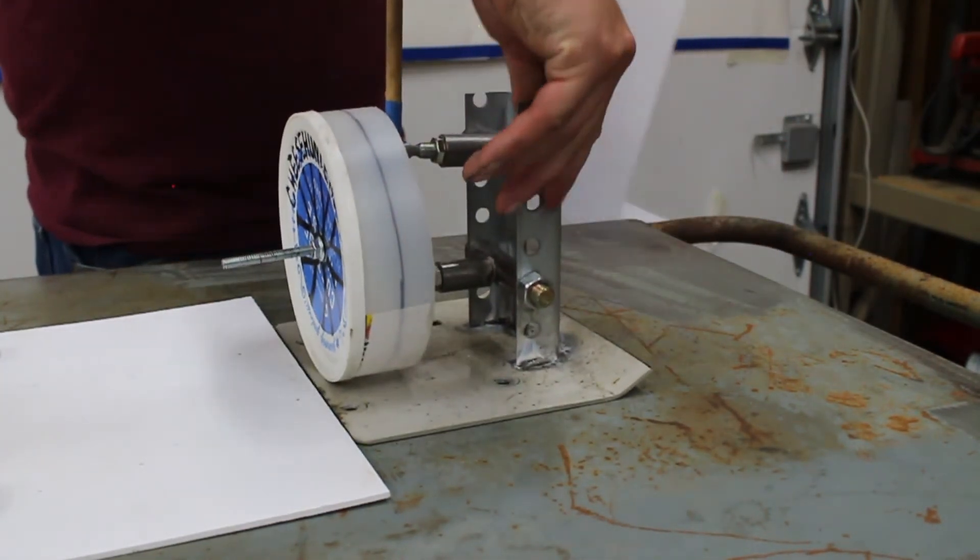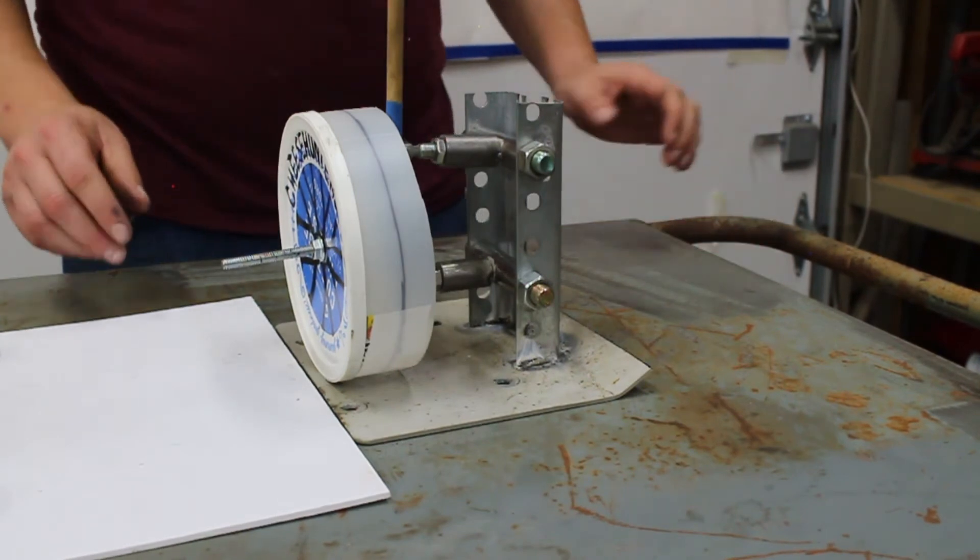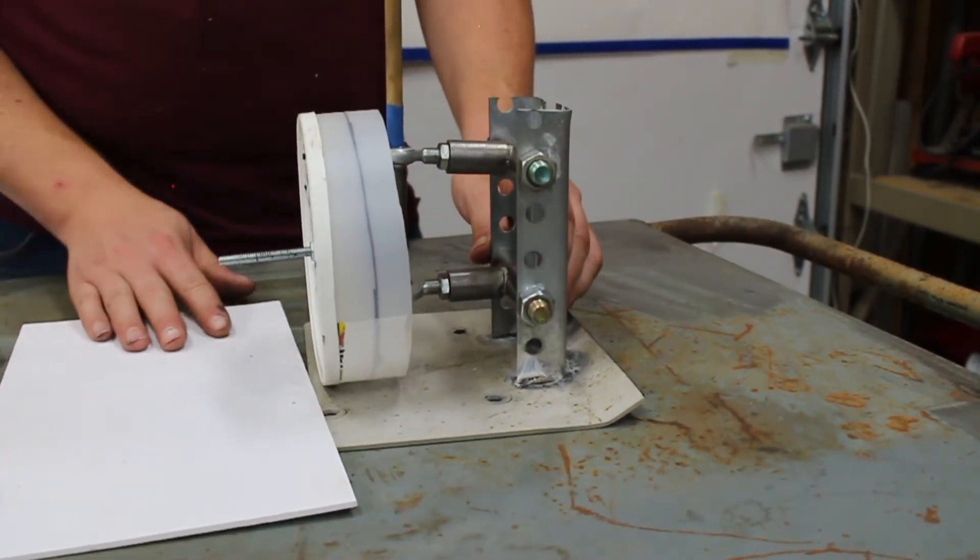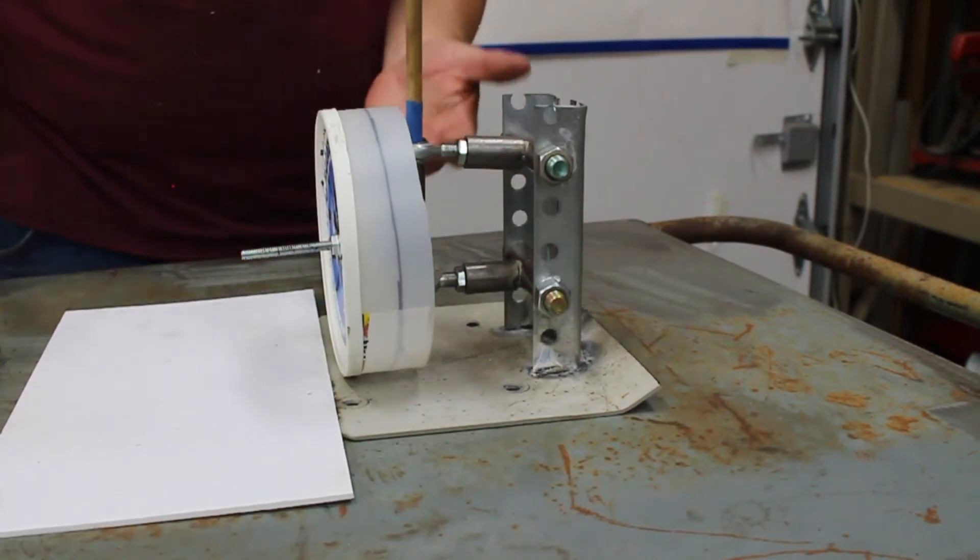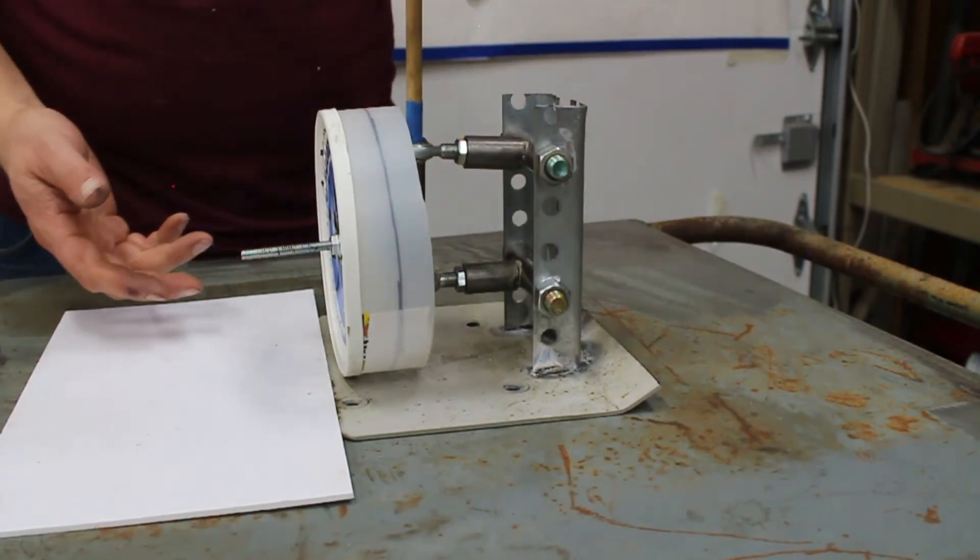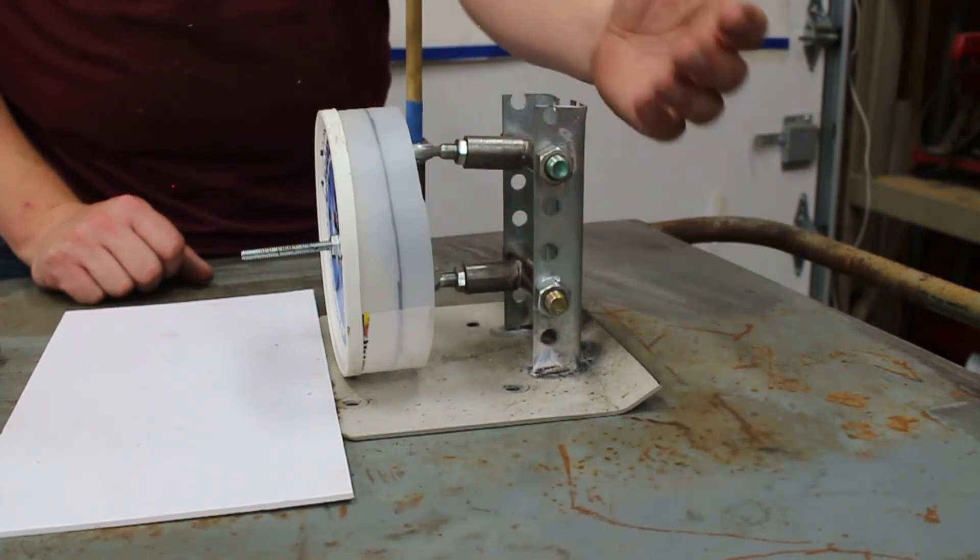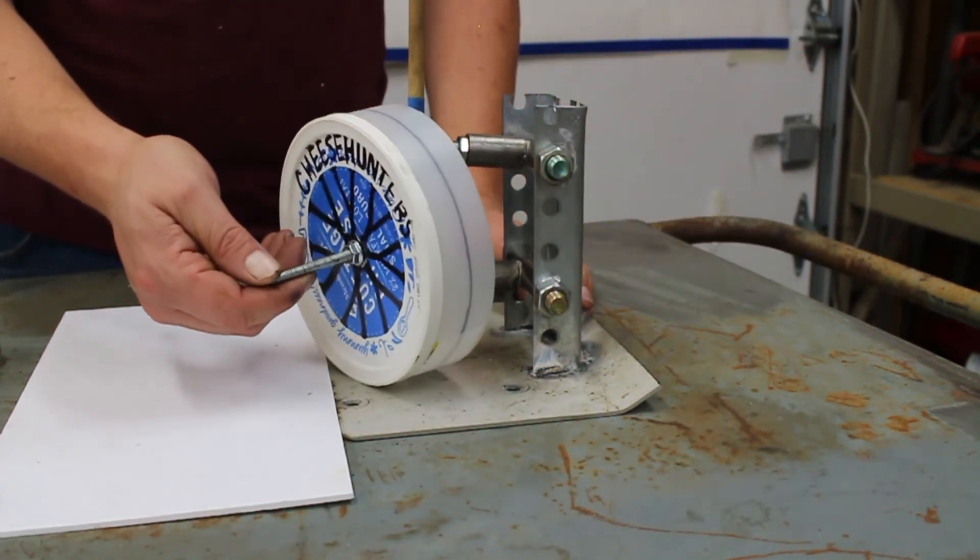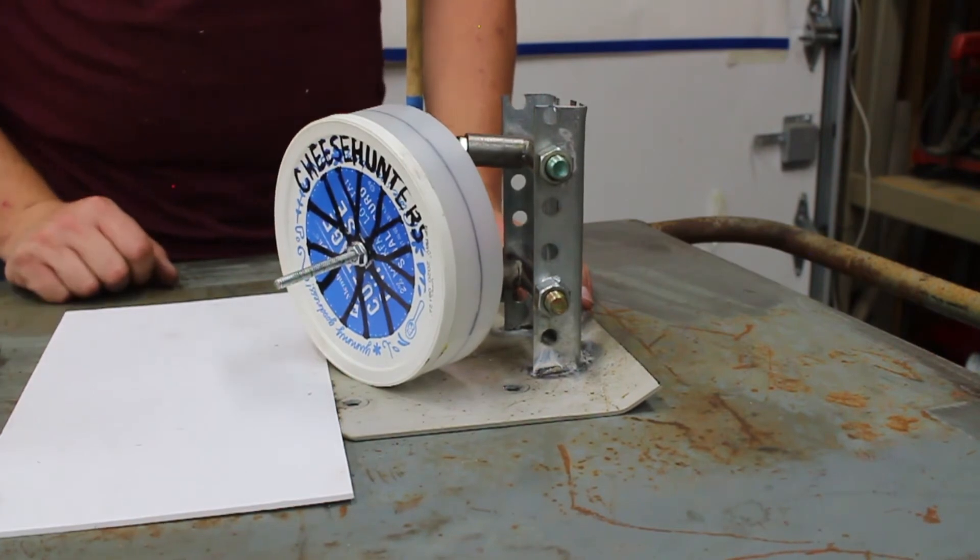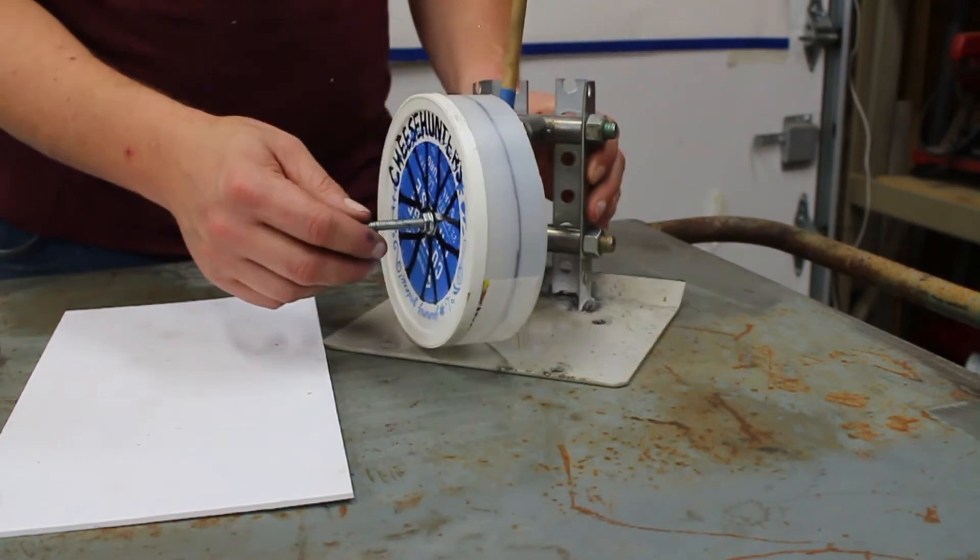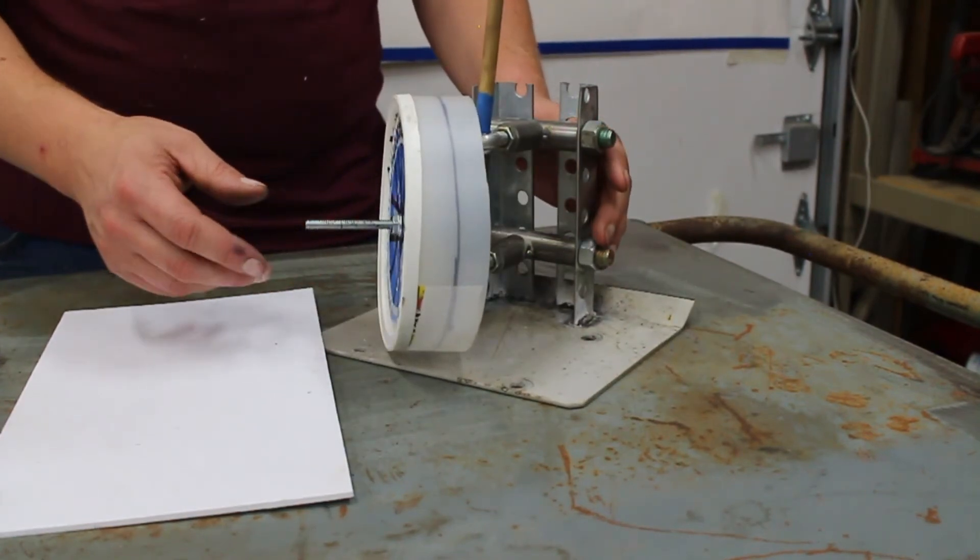Caster differs from kingpin inclination in that the effects are not the same when turning left and to the right. When turning the inside wheel, so in this example, saying that this side of the mock-up is the back of the car, as we turn the inside wheel, we'd introduce positive camber as we would with kingpin inclination. However, when we turn the other direction, we introduce negative camber.